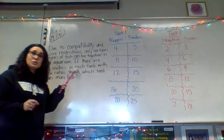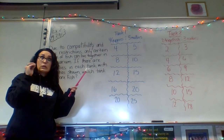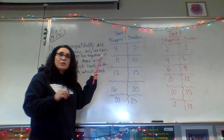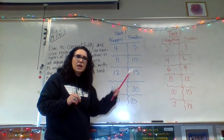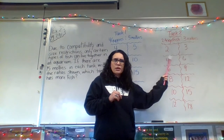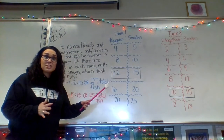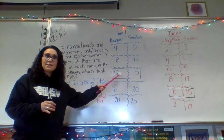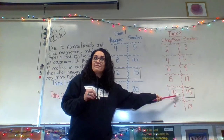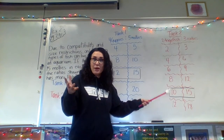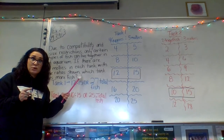Looking back at our original problem, it asks about 15 mollies — that's our magic number. In tank one, when we have 12 guppies, we'll have 15 mollies. In tank two, when we have 10 angelfish, we'll have 15 mollies. Now the question asks about total fish. In tank one: 12 guppies plus 15 mollies gives us 27 total fish. In tank two: 10 angelfish plus 15 mollies gives us 25 total fish. So which tank has more fish?